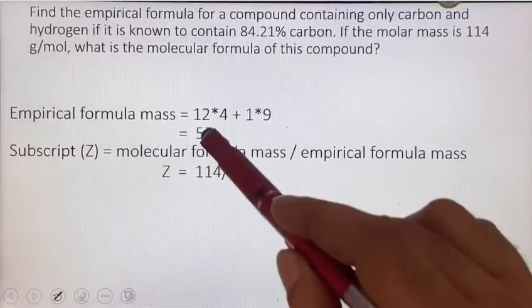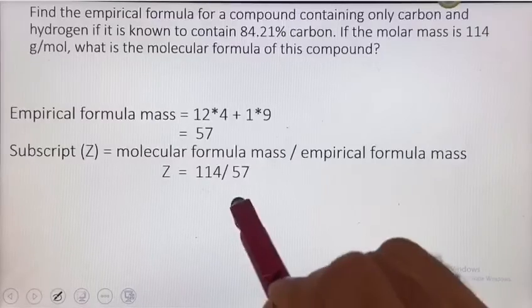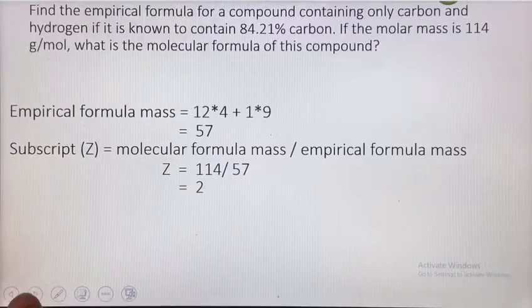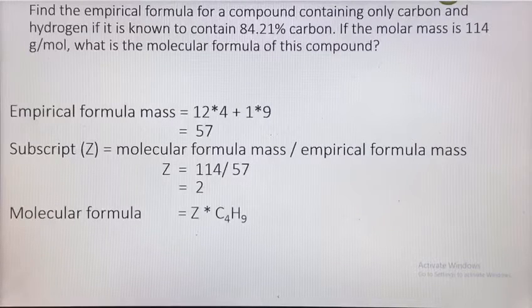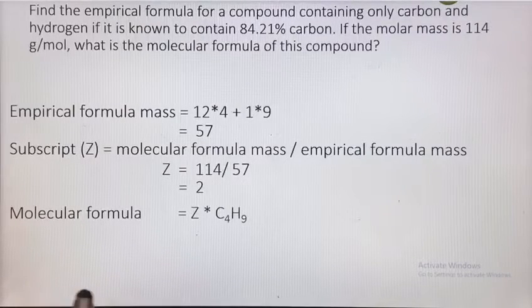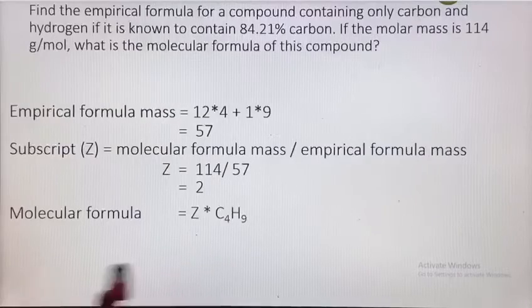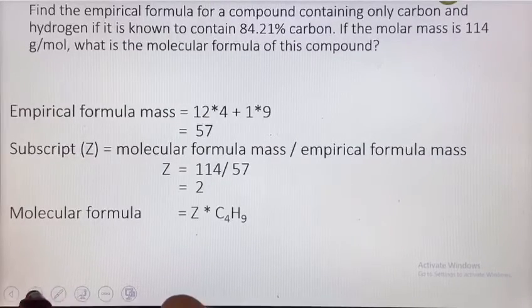Later on, you multiply this subscript with the empirical formula to calculate the molecular formula. So molecular formula is Z times C₄H₉. The value of Z is 2, which has been substituted here as 2 times C₄H₉.